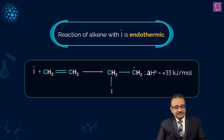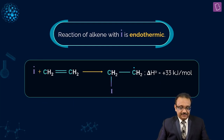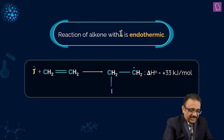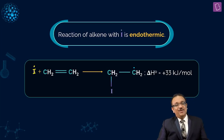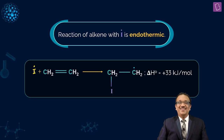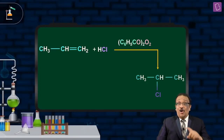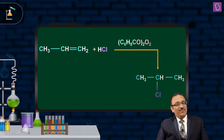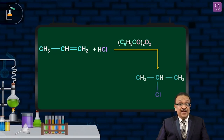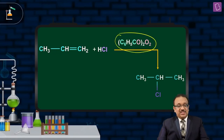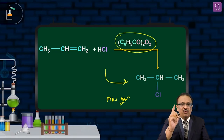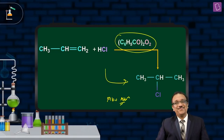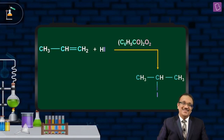In the iodination radical case, the first step is endothermic — radical mechanism will not proceed. Electrophilic addition mechanism will proceed. Peroxide mechanism will not work, so the reaction goes via electrophilic addition, and the result is Markovnikov addition. So even with peroxide, if you use HI or HCl, you get Markovnikov addition. That is the conclusion.